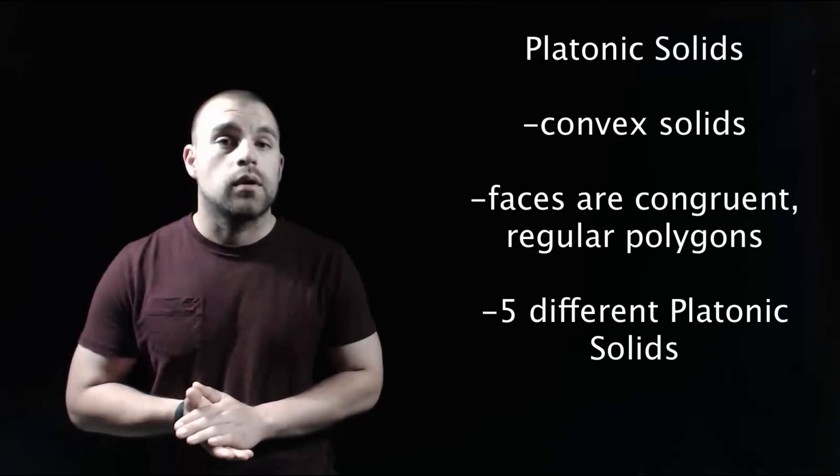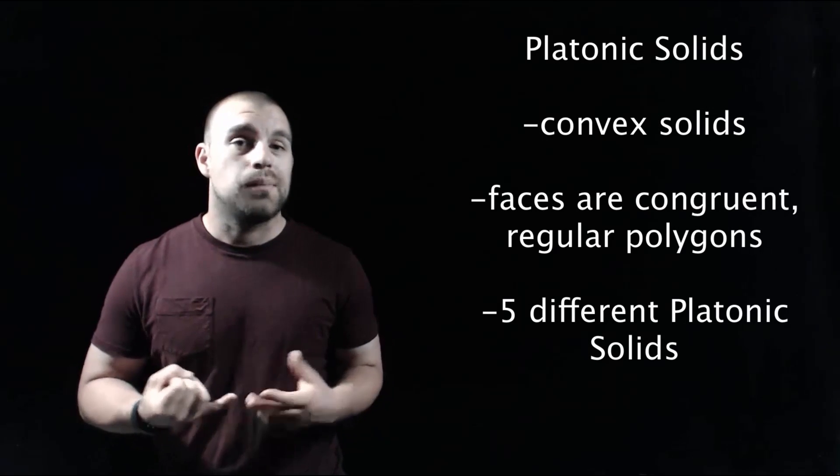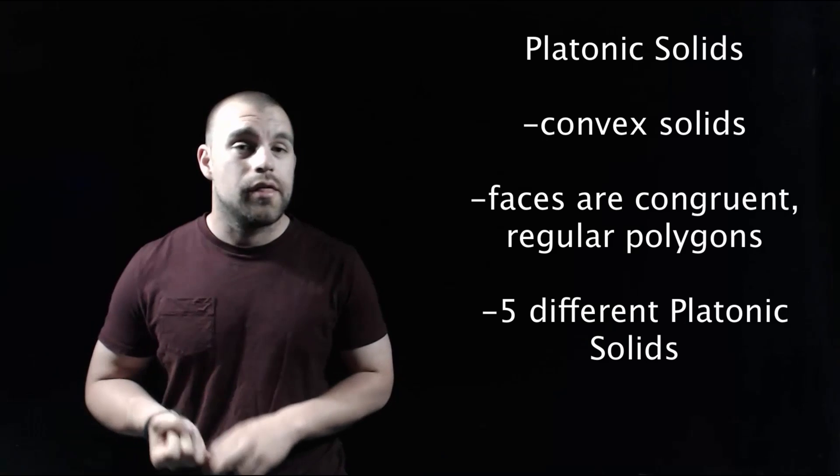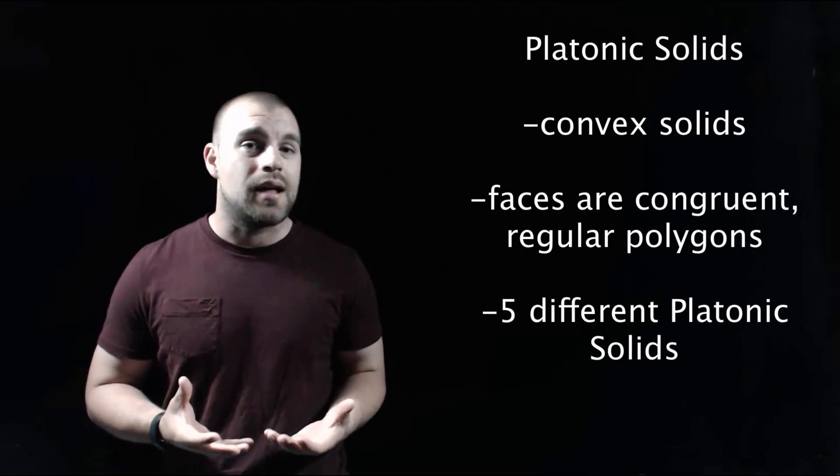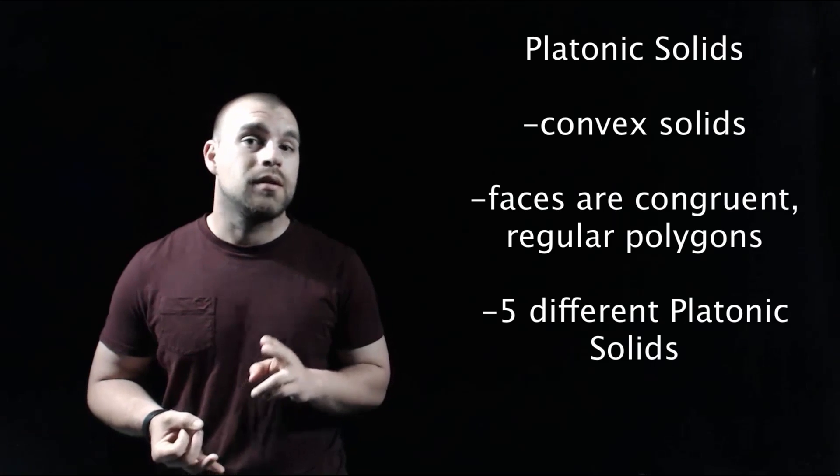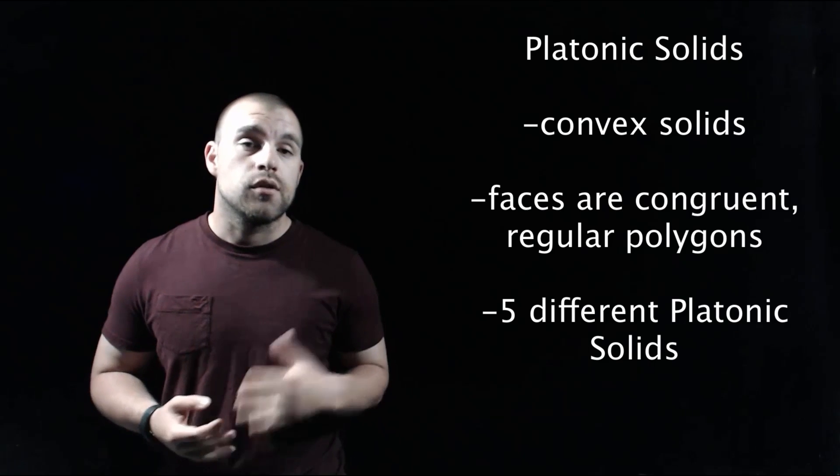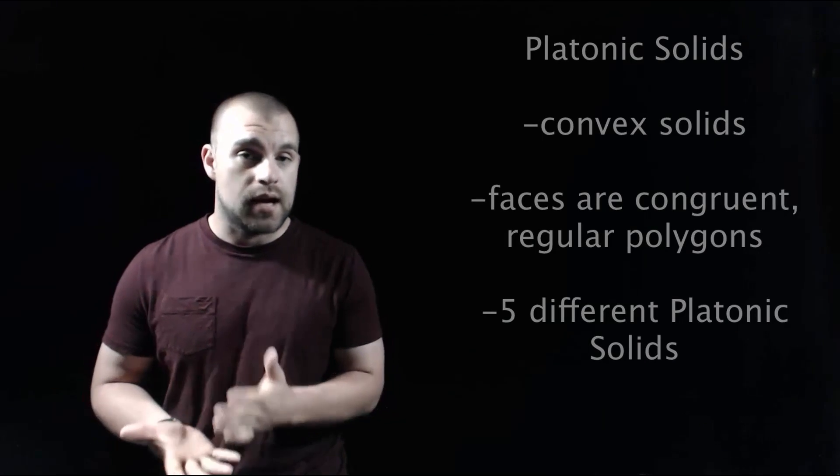The next thing we're going to talk about are things called platonic solids. Platonic solids are convex three-dimensional solids and all of the faces of a platonic solid are congruent regular polygons. There are five different kinds of platonic solids.